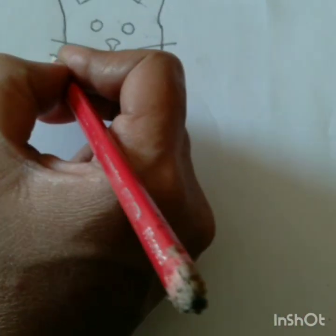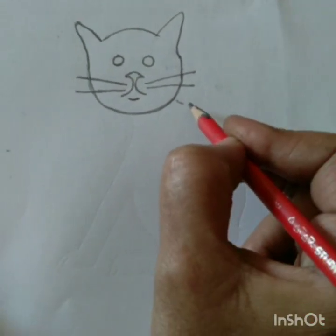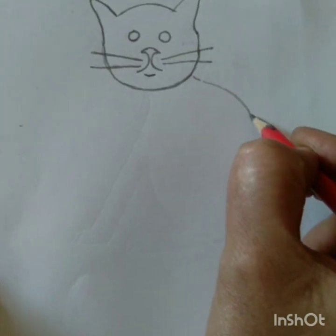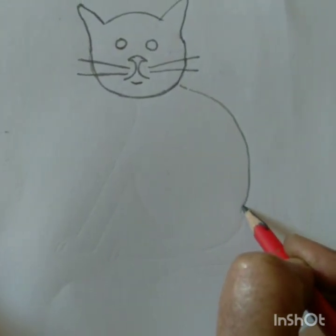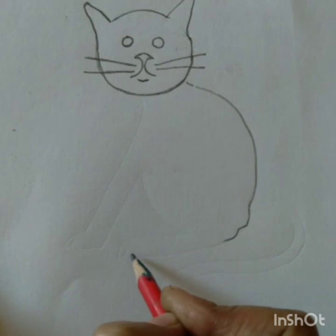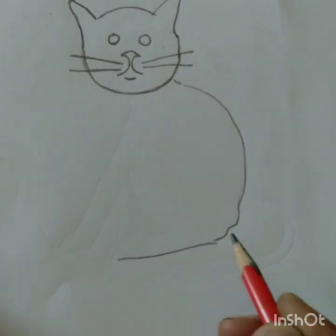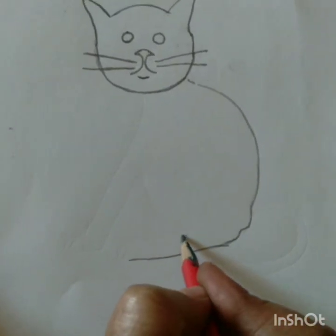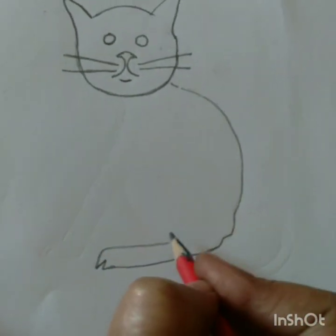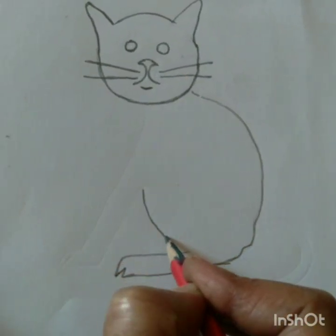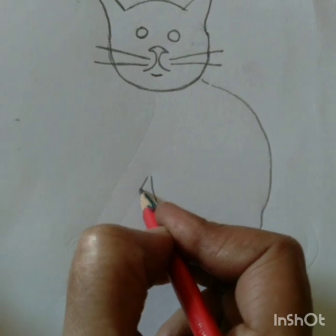Children, now we are drawing its back. Curve the line downside. Now we are drawing its legs. And then belly.